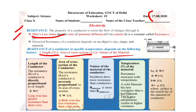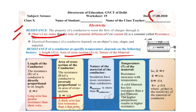The other factor is area of cross section. Resistance is inversely proportional to area — meaning if the area increases, resistance decreases. If the cross-sectional area of the wire is greater, the resistance is less. A thick wire has less resistance than a thin wire.